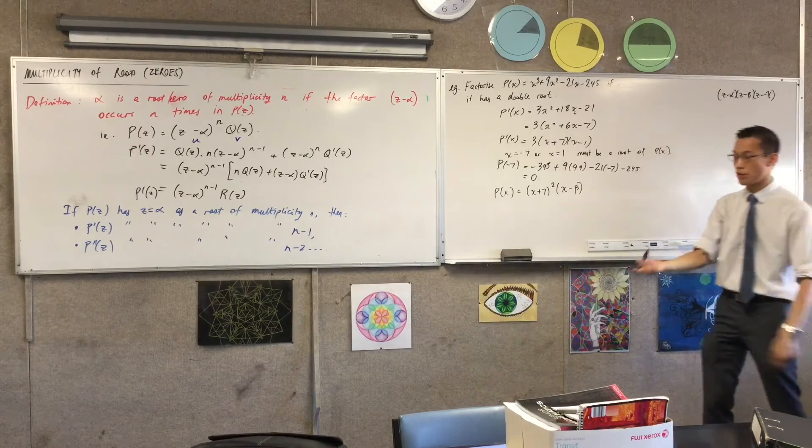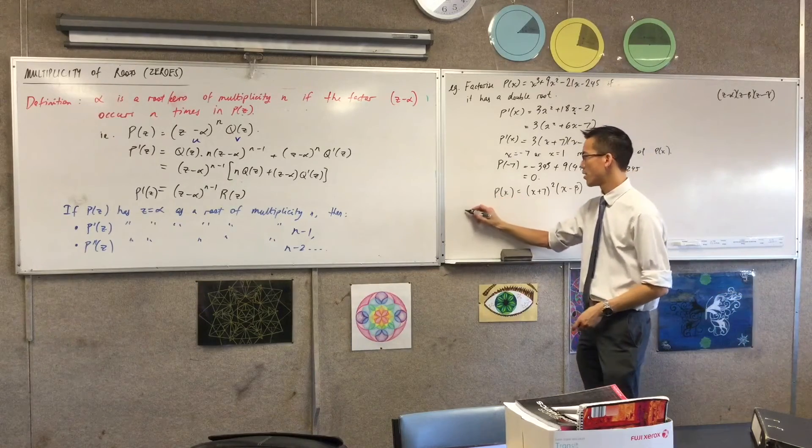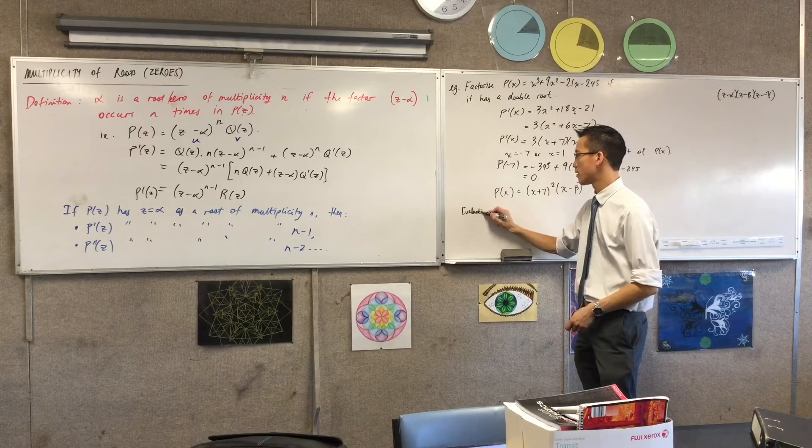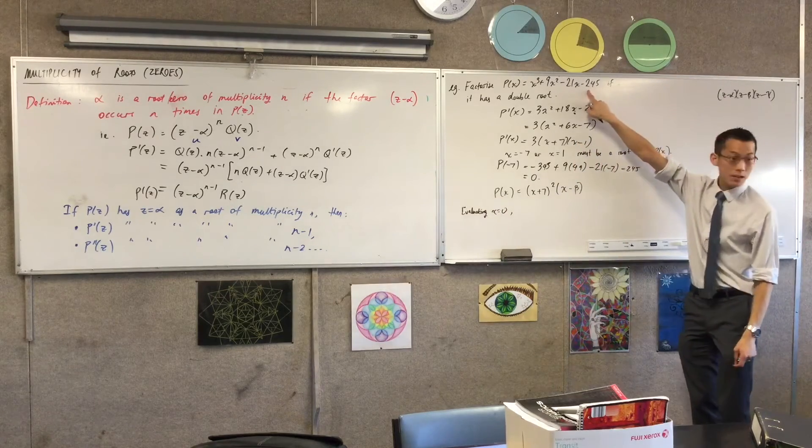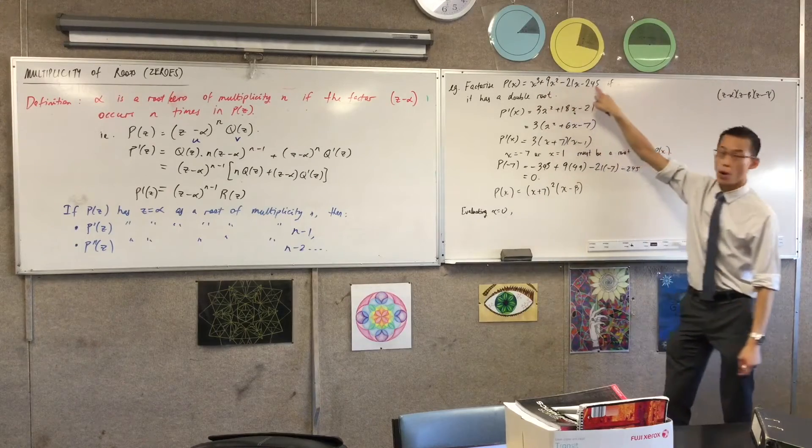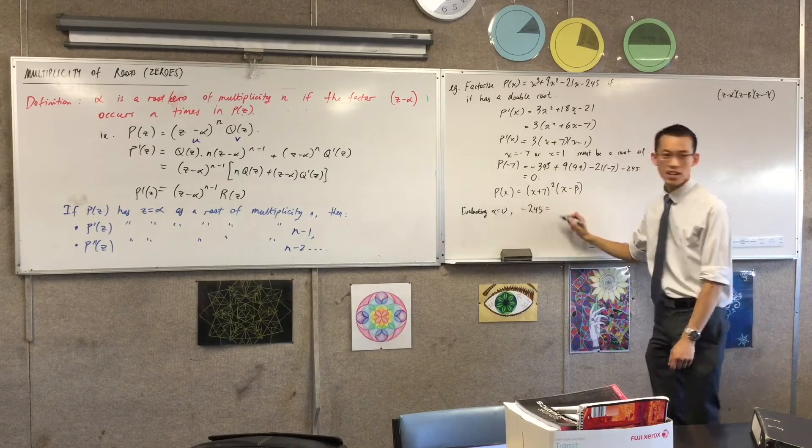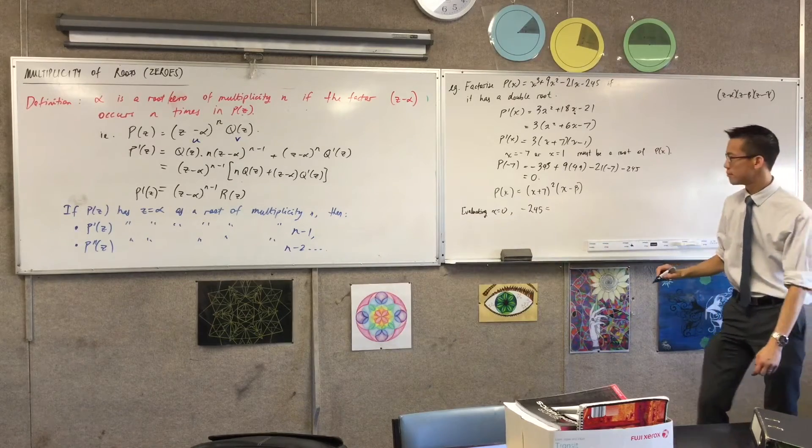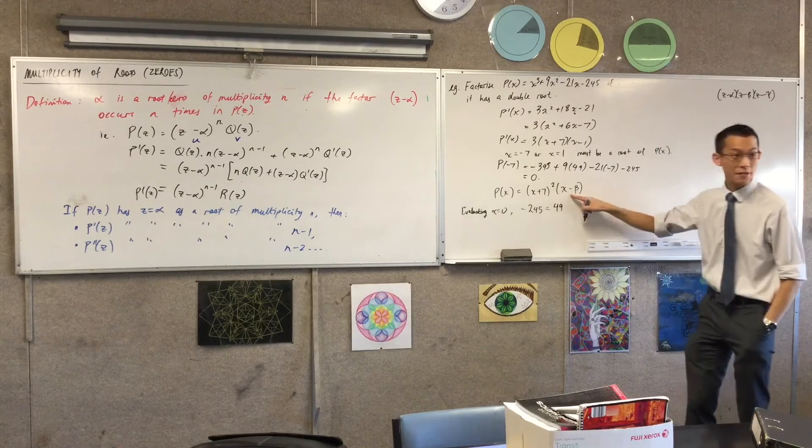At this point, you can do the method we said before. You can just evaluate P of 0. So evaluating at x equals 0. On the left-hand side, by definition, 0, 0, 0, negative 245. What's that going to be equal to? 49. This is 49. Very good.